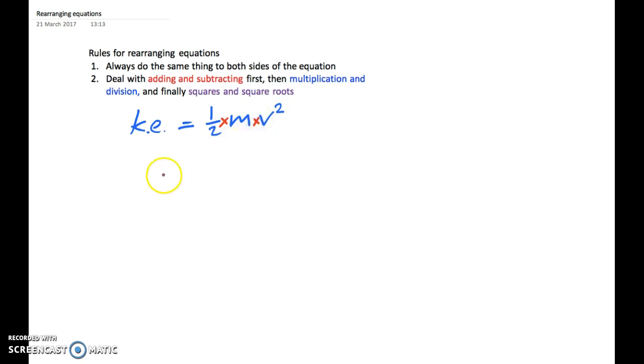So let's say we want to find M. We want to make M the subject. At the moment, M is multiplied by a half and it's multiplied by v squared.